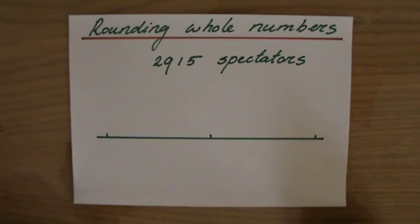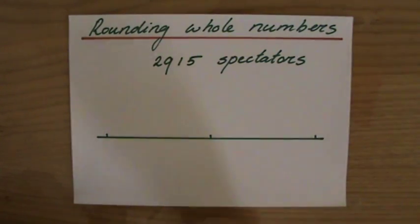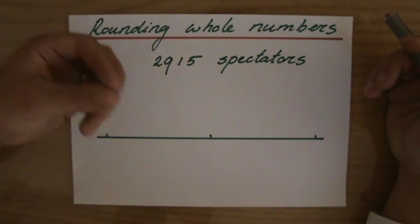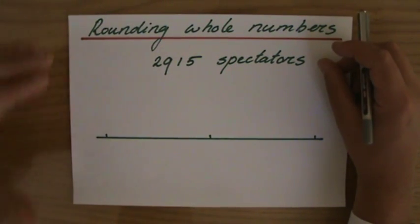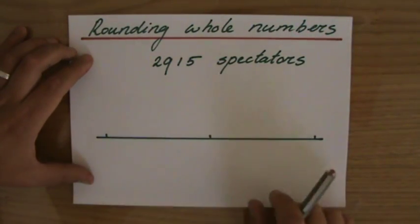Good morning, boys and girls. We are going to round whole numbers and it's important that you can round whole numbers to a particular accuracy because you will notice that in many occasions, for many answers in the future, you will have to round your final answer. So you have to be able to do so properly and you can only do it properly if you understand what you're doing.